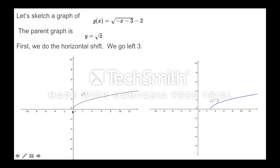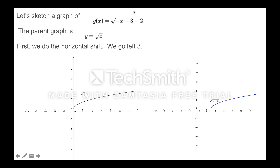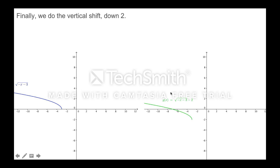Our parent graph is y = √x. First, we do the horizontal translation: go right 3. Then we do the reflection — this is what we have right now — we flip it over the y-axis. So instead of starting at positive 3 and going to the right, it's going to start at negative 3 and go to the left. Finally, we go down 2: we take this graph and move it down 2 units, and we get this green graph.